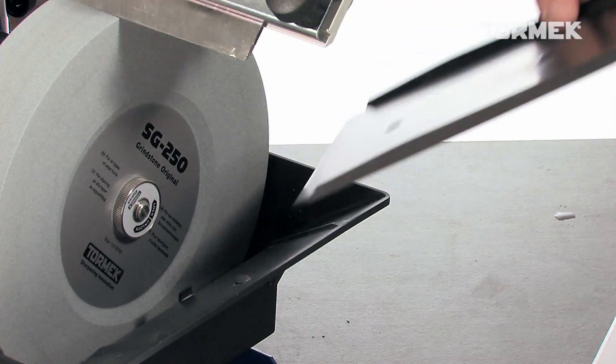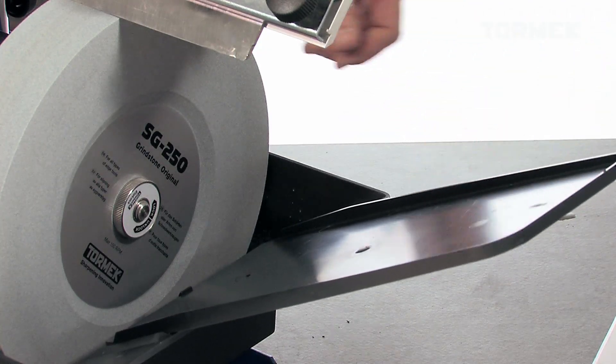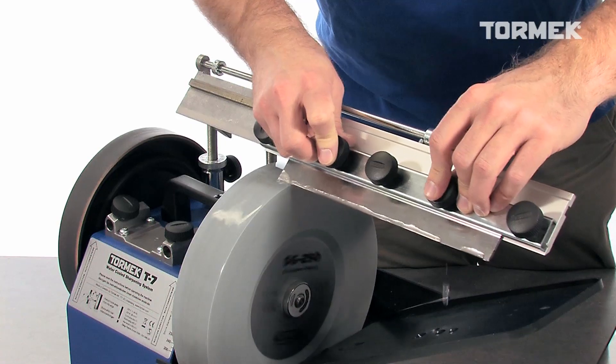The removable water chute is ideal when sharpening long tools like planar blades.